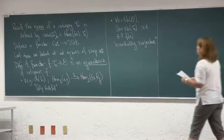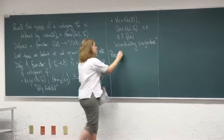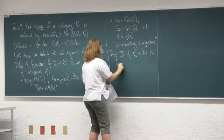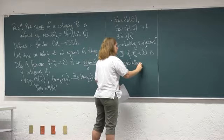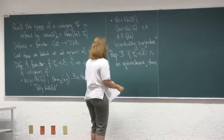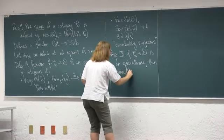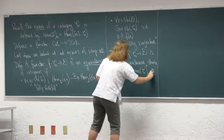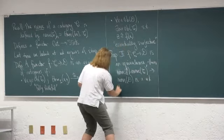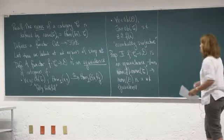Here's our starting point today: if I have a functor that's an equivalence of categories and I apply the nerve functor, I'm going to get a weak equivalence of simplicial sets. That's a nice property to have.